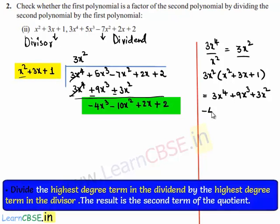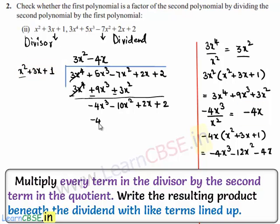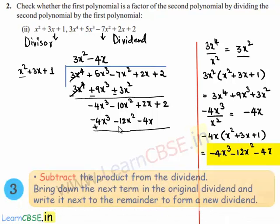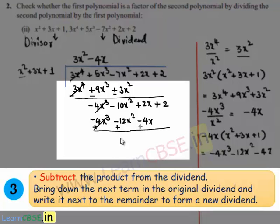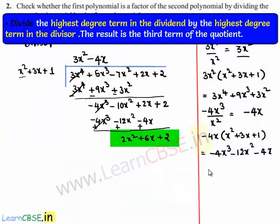The new dividend has highest degree term -4x³ and the divisor has highest term x². On dividing them we get -4x. So -4x multiplied by the divisor x²+3x+1 gives -4x³-12x²-4x. On subtracting: -4x³ and +4x³ cancel, -10x²+12x² gives 2x², and 2x+4x gives 6x, bringing down +2. The new dividend is 2x²+6x+2.